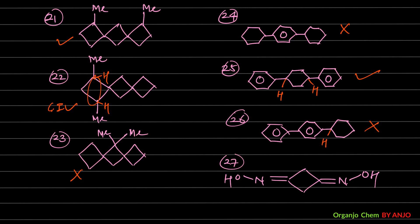Example 27 (hemispirene): The count of double bonds plus rings is odd. At one terminus, nitrogen has OH and a lone pair — two different groups. At the other terminus, nitrogen also has OH and a lone pair — two different groups. Since lone pairs are treated as pseudo atoms by CIP rules, both groups are considered different. The cumulative GI condition is fulfilled — GI is possible for example 27.